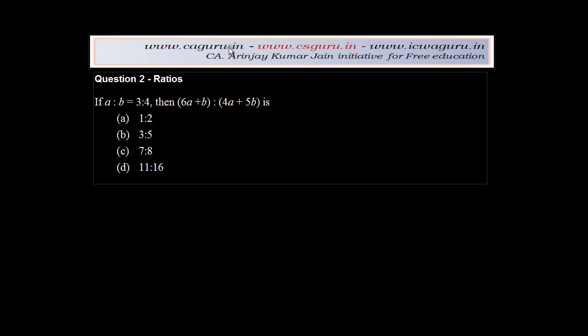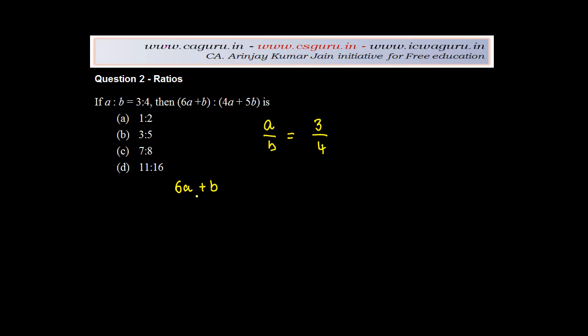Now you're given that, let's just first write down because that simplifies a lot of problems. a upon b is equal to 3 upon 4. And what do you need to find out? You need to find out 6a plus b upon 4a plus 5b.